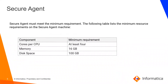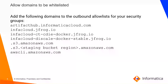These are the minimum requirements which your secure agent machine should meet: at least 8 CPUs, 16 GB memory, and 100 GB disk space. These are the domains which need to be whitelisted in the outbound allow list for your security groups, required to fetch artifacts like images for running the mappings.